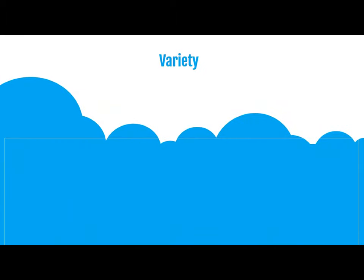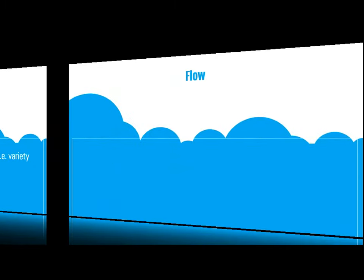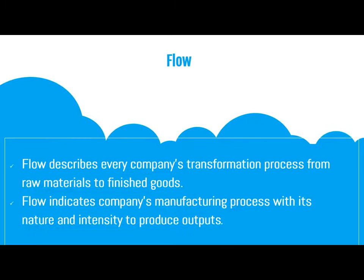The next characteristic is Variety. Variety describes the amount of various items — that is, the variety of items — produced by any company. The third characteristic is Flow. Flow describes every company's transformation process from raw materials to finished goods, and indicates the company's manufacturing process with its nature and intensity to produce outputs.